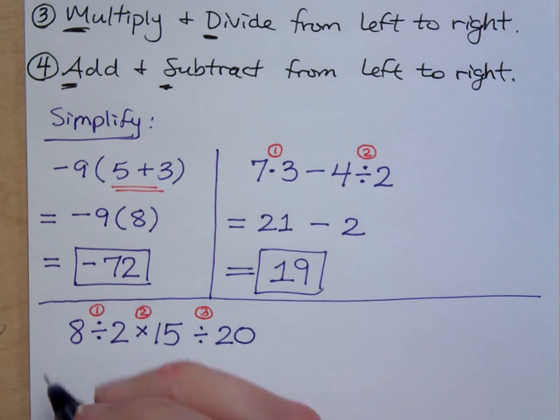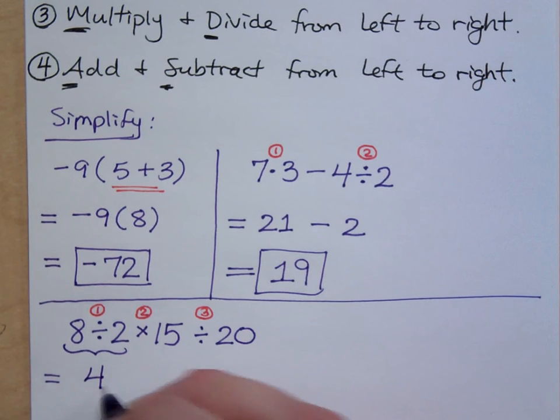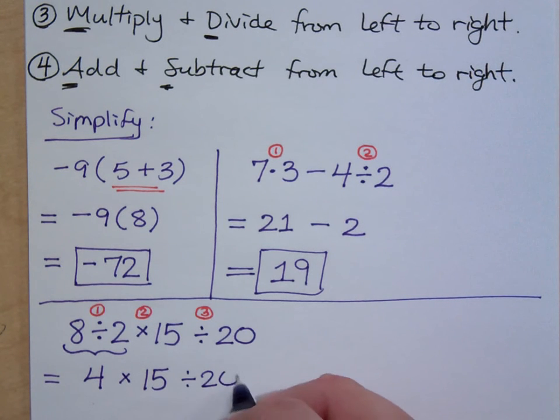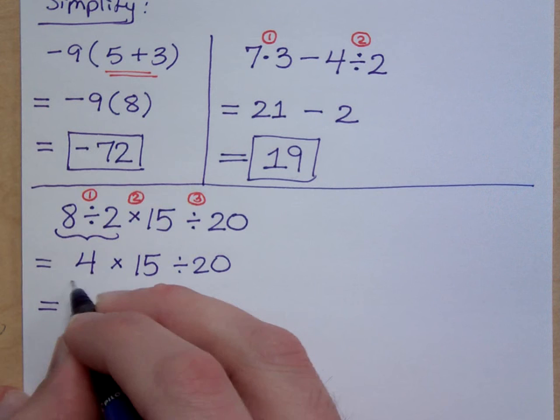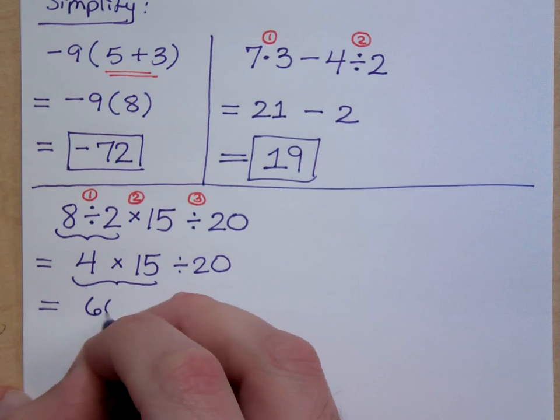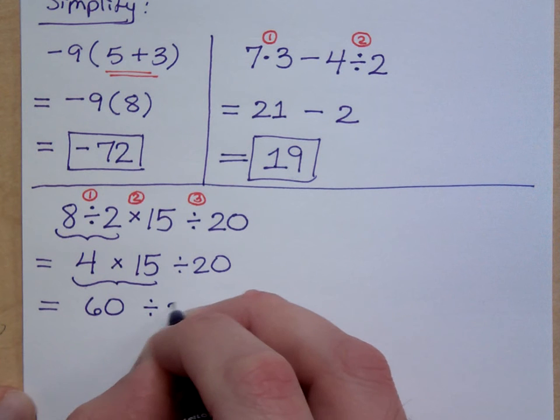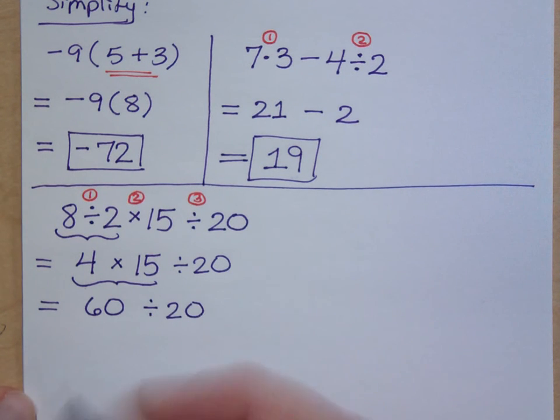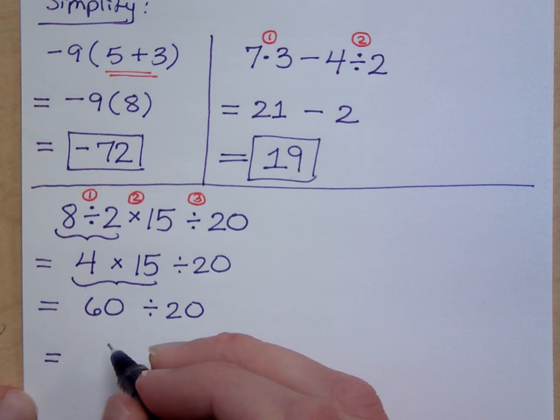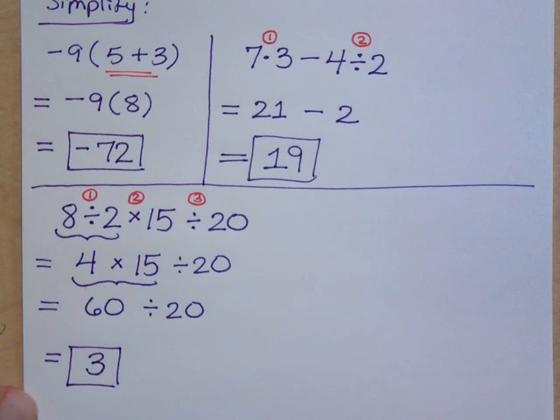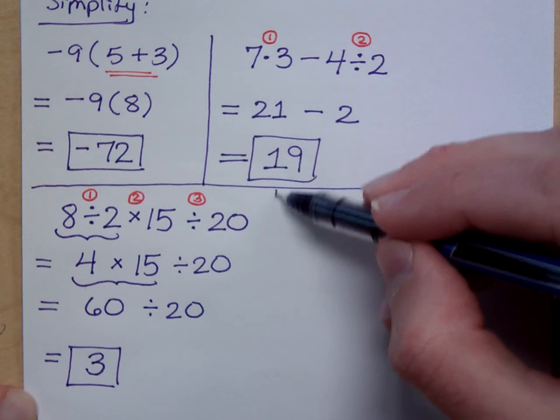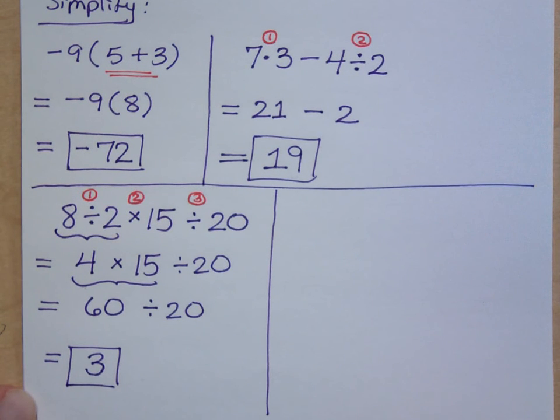What's 8 divided by 2? So, this first part is 4, and I'll bring down everything else. So, I've got 4 times 15 divided by 20. Then what? 4 times 15 is 60, and then I'll bring down this, divide by 20. And what's 60 divided by 20? It's just 3, right? Order is very, very important to us. Very important. Questions about that one?